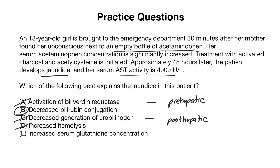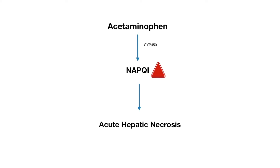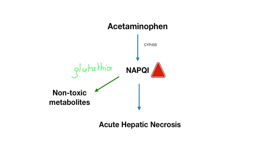Answer choice E, increased serum glutathione concentration, is incorrect because it should actually read as decreased serum glutathione concentration. When Tylenol is ingested, it is broken down through the CYP450 system into a toxic metabolite known as NAPQI. This metabolite can actually lead to acute hepatic necrosis. However, with the help of glutathione, NAPQI is converted into non-toxic metabolites. But in the case of an overdose, a lot of NAPQI is being converted, and so our glutathione stores get depleted.